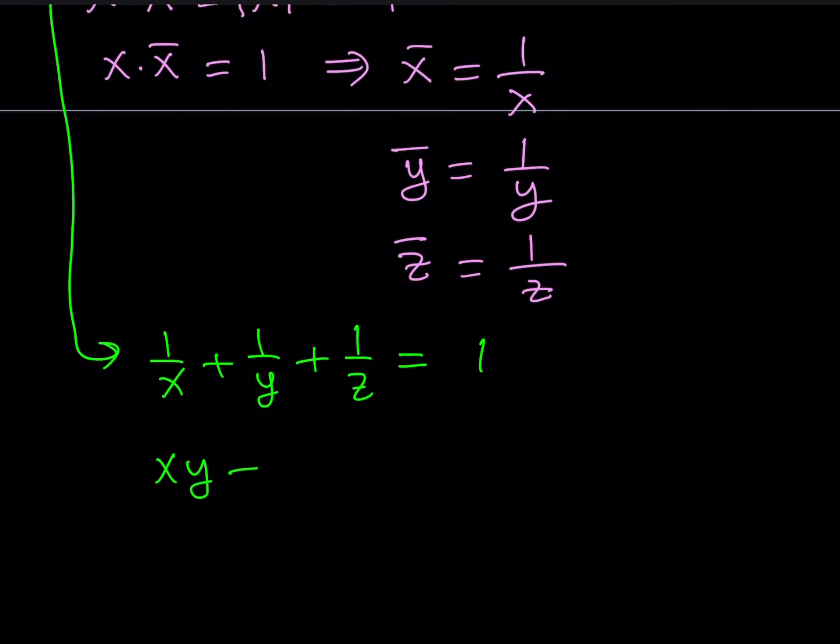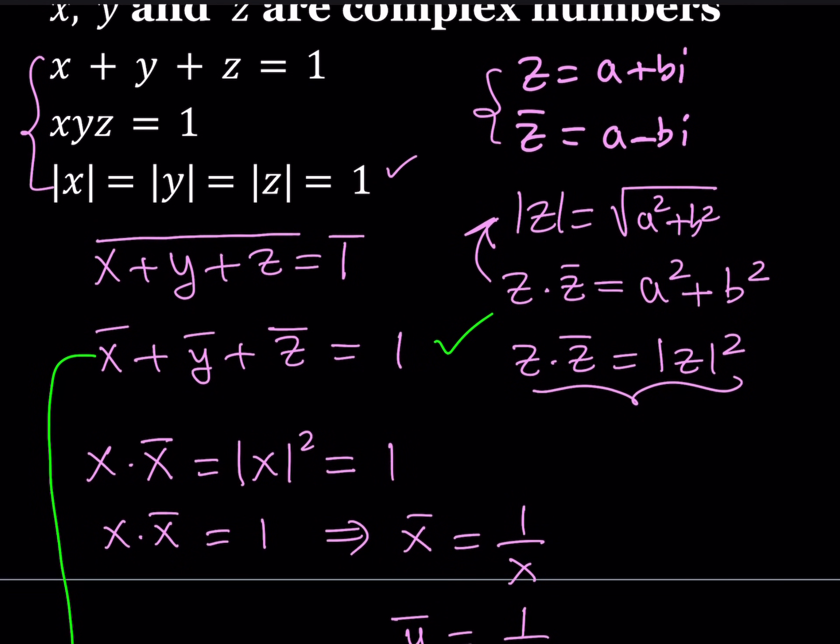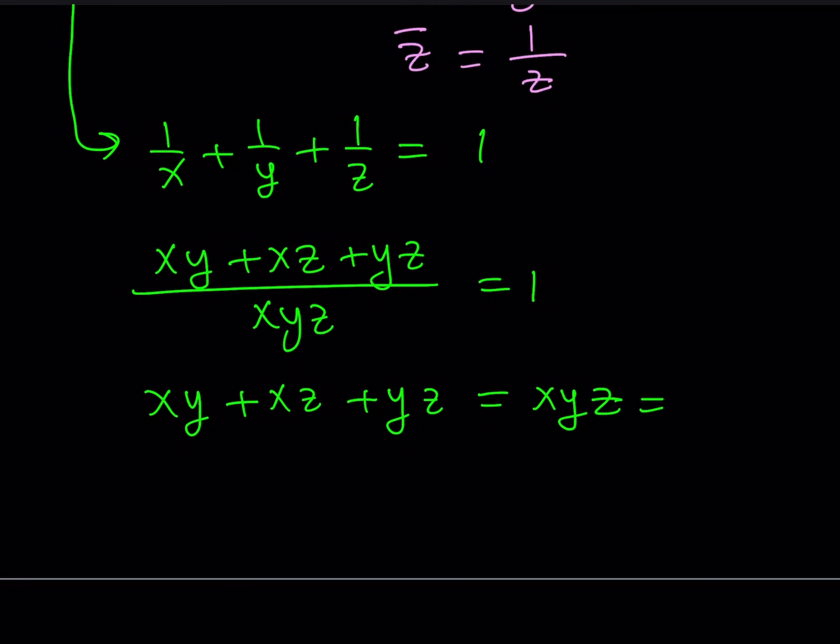This gives me XY plus XZ plus YZ divided by XYZ. And that should equal 1. So when that equals 1, I can just go ahead and cross multiply. And this should give me XY plus XZ plus YZ equals XYZ. But guess what? XYZ equals 1. So we know that. So that means we have the XY plus XZ plus YZ is also equal to 1.